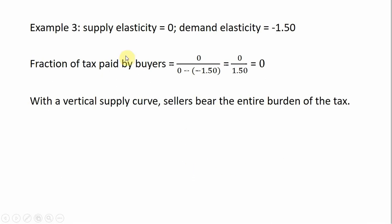Example three: here the price elasticity of supply is zero, which corresponds to a vertical supply curve or a perfectly inelastic supply curve. The price elasticity of demand is minus 1.5. Plugging these results into the formula, we see that the fraction of tax paid by buyers is zero. The entire tax burden in this case will be placed on sellers in the form of lower prices.